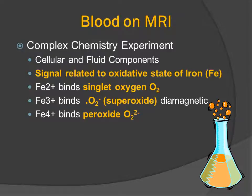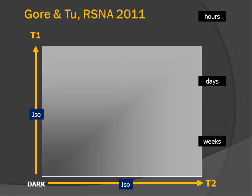Now, the appearance on MR is much more complex — it's like a chemistry experiment. We have to think about the oxidative state of the iron in the hemoglobin as changing the signal intensity, and we talk about susceptibility and paramagnetic effects of the iron moiety in the hemoglobin.